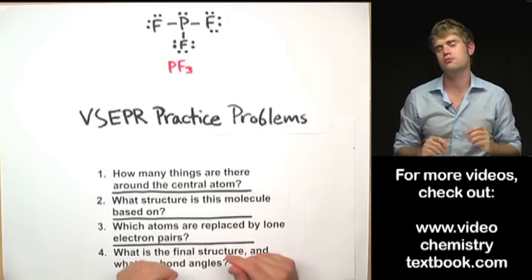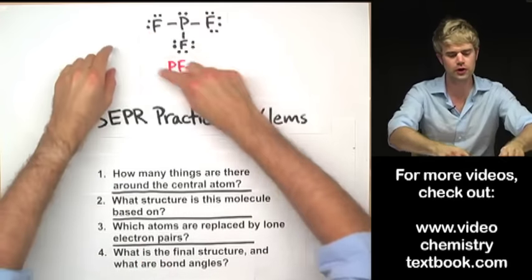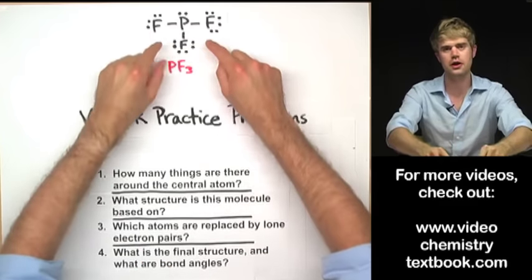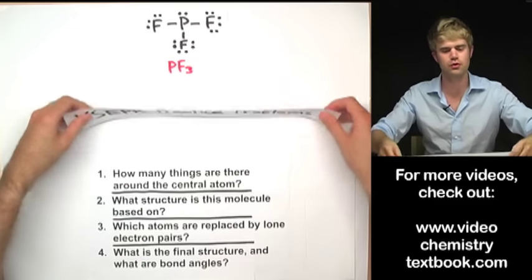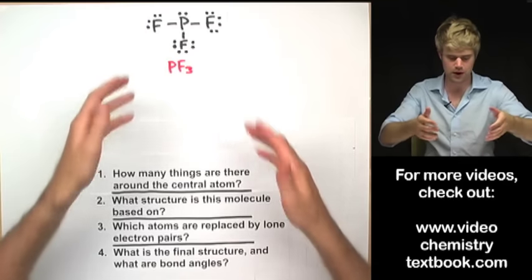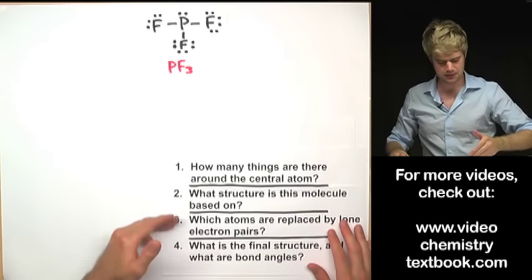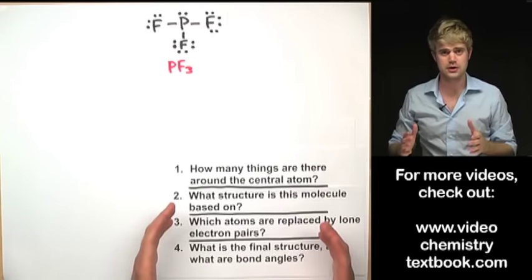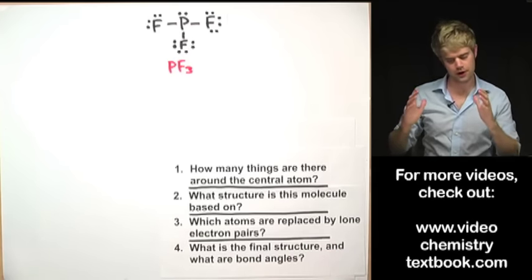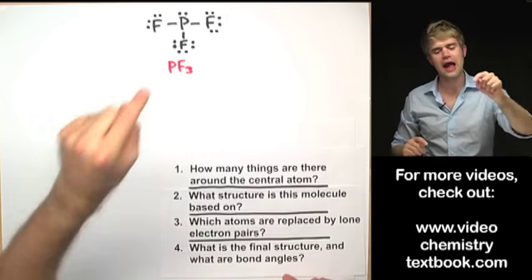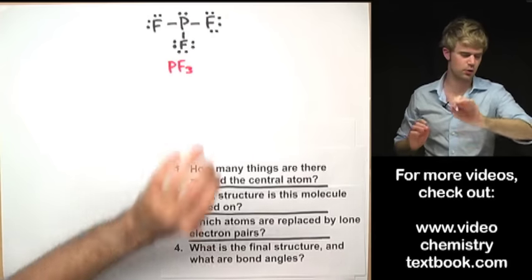We're going to do a whole bunch of practice problems so you'll get super good at looking at a Lewis structure and figuring out what its three-dimensional VSEPR shape would be. We'll start out right away with PF3. On this paper are four questions — these represent the thought process you want to go through every time you figure out the VSEPR structure for one of these shapes.